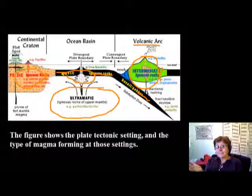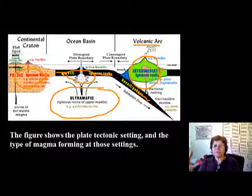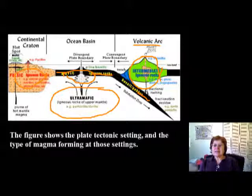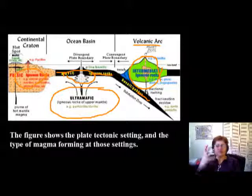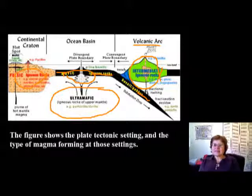If you have hotspot volcanoes such as Hawaii, the magma is coming from the mantle so it's always going to be mafic in composition. This plate tectonic figure clearly explains the different settings and what kind of magma is forming. Plate tectonics globally explains the formation of about 200 different igneous rocks, which is really amazing.